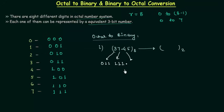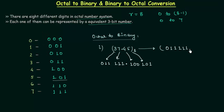After the point, 4 is written as 100 and 5 is written as 101. So the binary equivalent of the octal number 37.45 is 011111.100101. It is very easy to convert an octal number to binary.